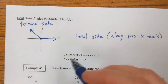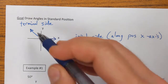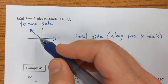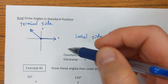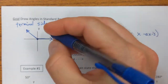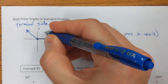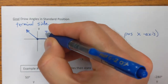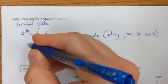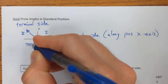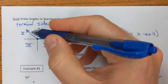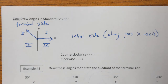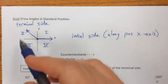So these are the two sides of the angle — the initial side and the terminal side. The terminal side can go in any of the quadrants. Remember, on a coordinate plane you have quadrant one, quadrant two, quadrant three, and quadrant four. So this particular angle has its terminal side in quadrant two, but it can go anywhere.